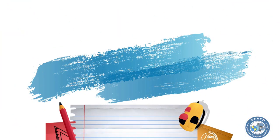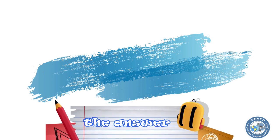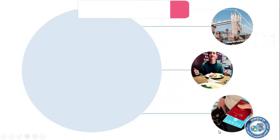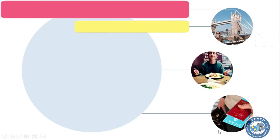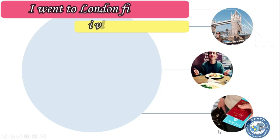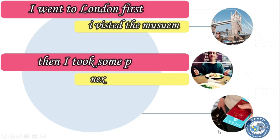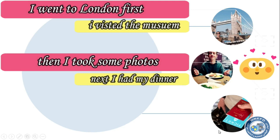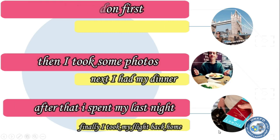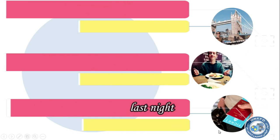Alright, so let's see the answers now. We join the following sentences together using the linking words. 'I went to London. First, I visited the museum. Then I took some photos. Next, I had my dinner. After that, I spent my last night. Finally, I took my flight back home.'